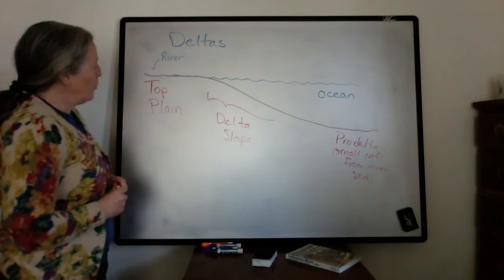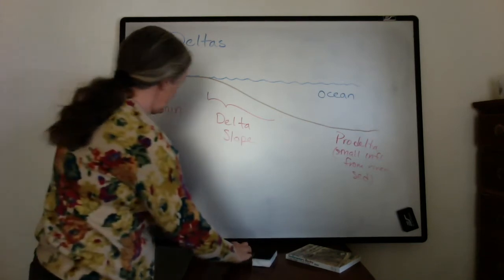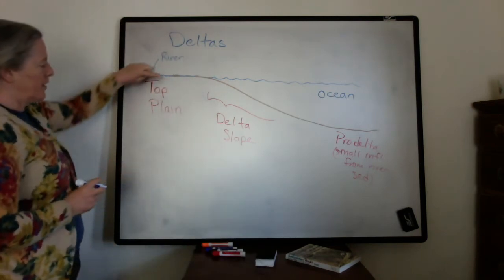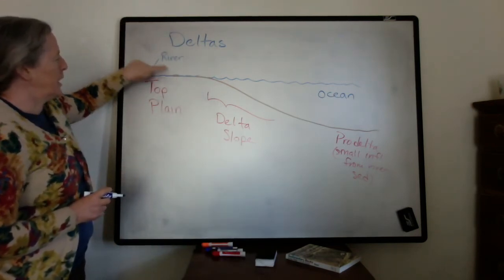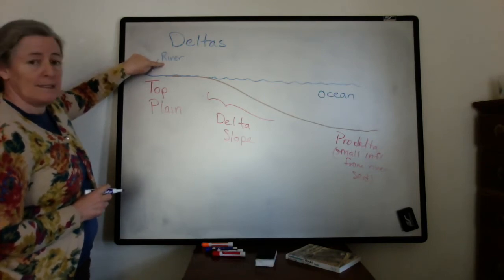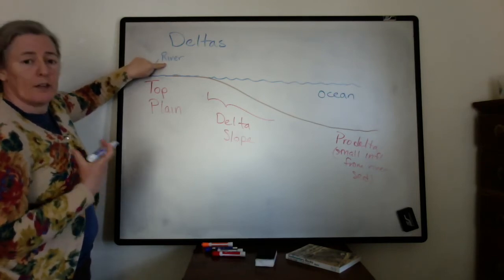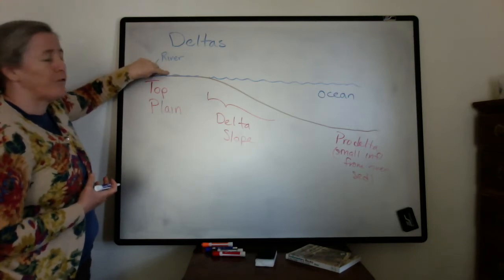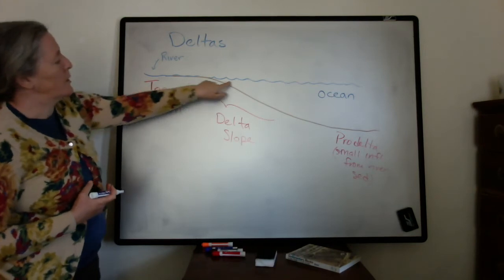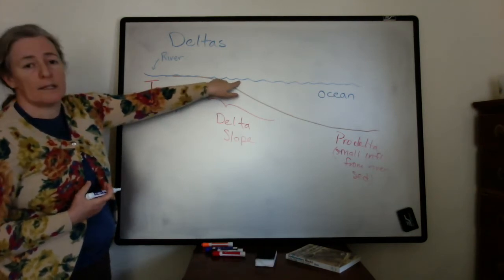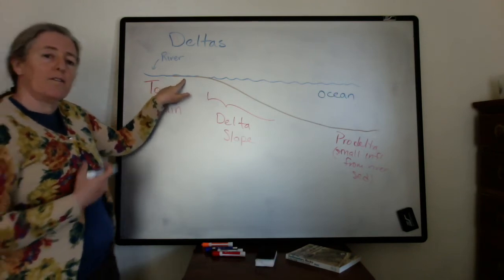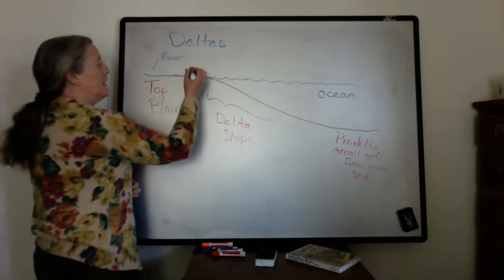There are different processes that happen in each one of these environments. On the top of the delta, or the delta plane, you have mostly river facies deposited. You have river channels and levees and floodplains. But the top of the delta is almost always at the same height as sea level, and so you often get a lot of lakes or bays in this zone.